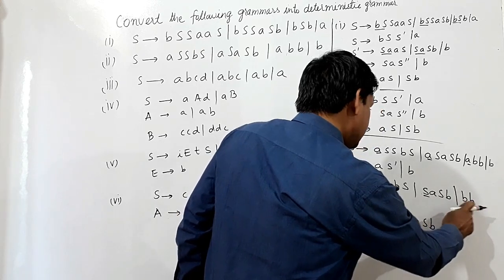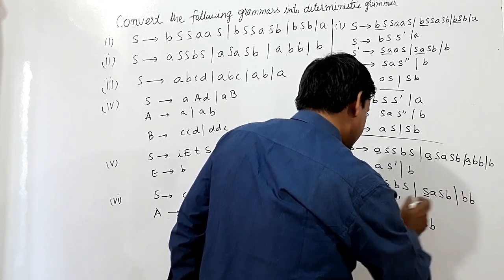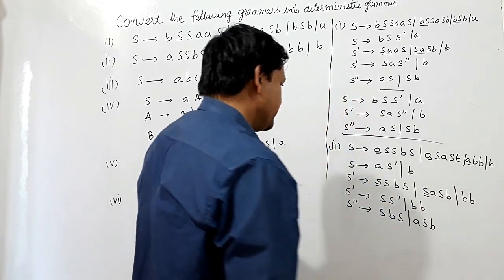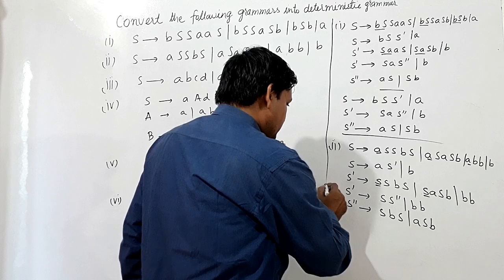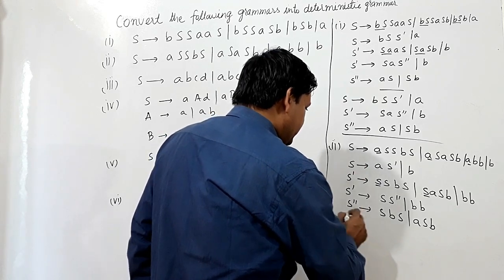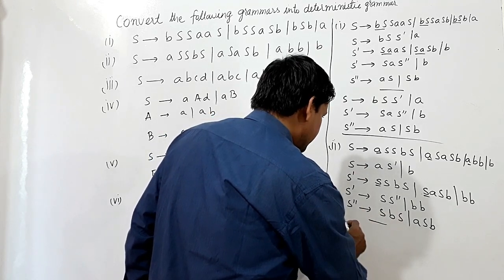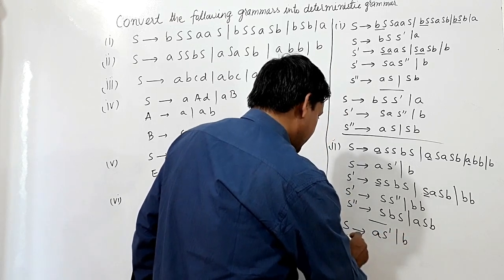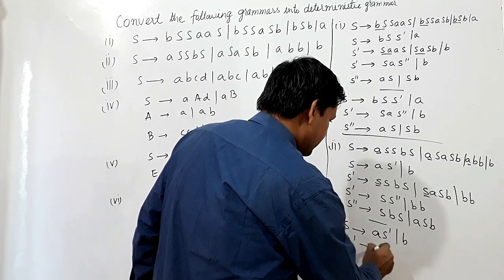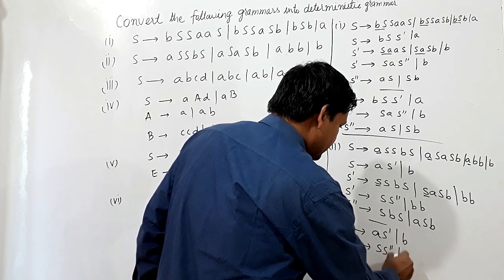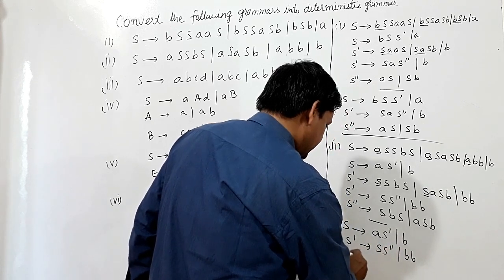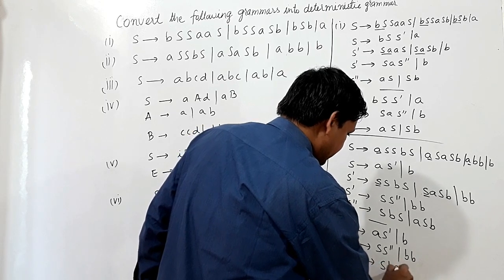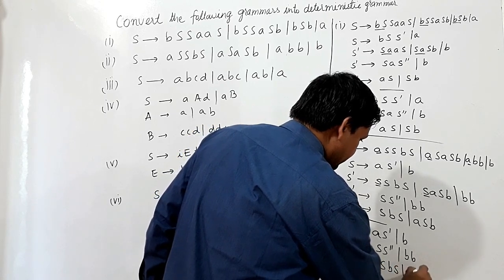This remaining part is written as it is in this production. S-dash can produce it now. The deterministic grammar can be written as: S produces AS-dash or B, S-dash produces SS-double-dash or BB, and S-double-dash can be written as SBS or ASB.